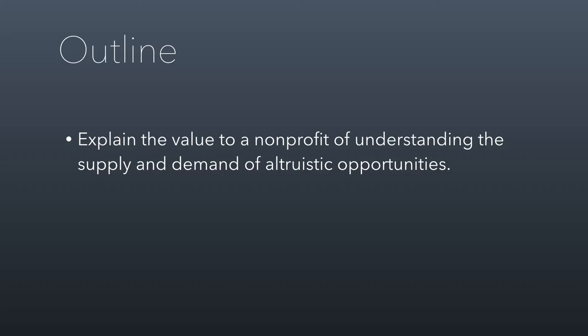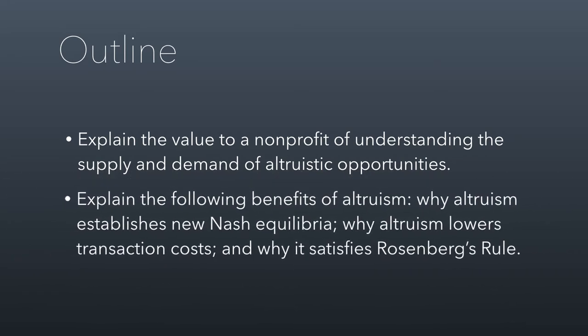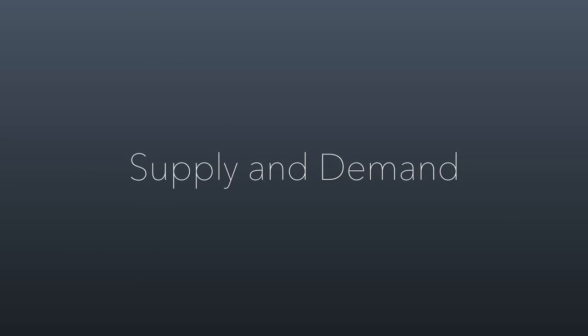I want to make sure we dig into this a little bit because there are some really cool ideas in it. And then we're going to illustrate some of the benefits of altruism — how altruism is actually economically superior behavior given certain conditions. We're going to talk about how it establishes new Nash equilibria, how it lowers transaction costs, and why it satisfies something called Rosenberg's rule. So let's start with the supply and demand discussion.